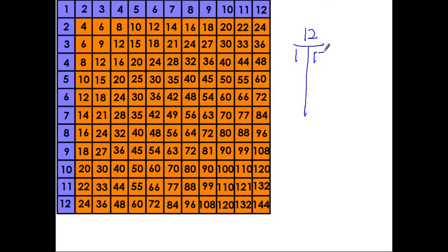1 is going to be a factor of every number, so that one you should be able to get that one every time. 1 and the number is always a factor. Then you can go to 2. There's a, goes out to 12, up to 6. 2 and 6.